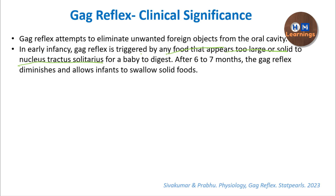Although the gag reflex is involuntary, it can be modified by higher cortical centers. Trained individuals can suppress the response even when an adequate stimulus is applied. We will see what this means in the context of modifying reflexes in the next slide.